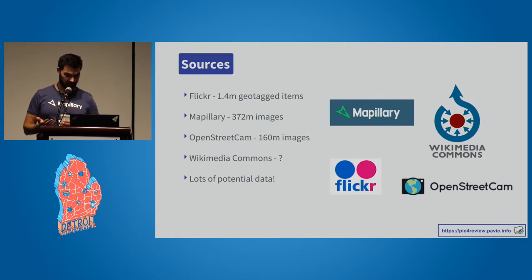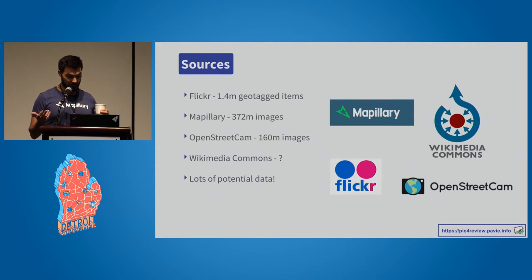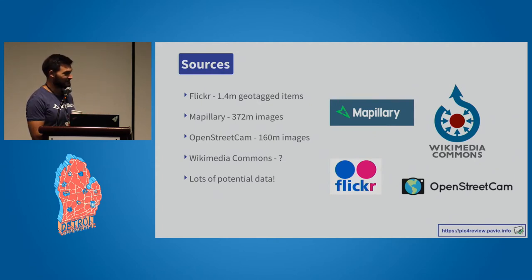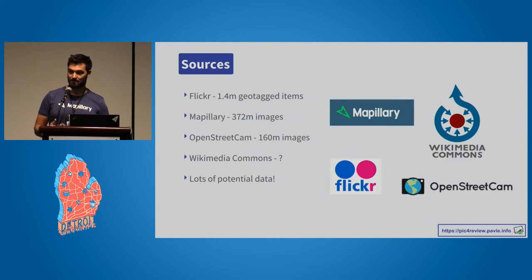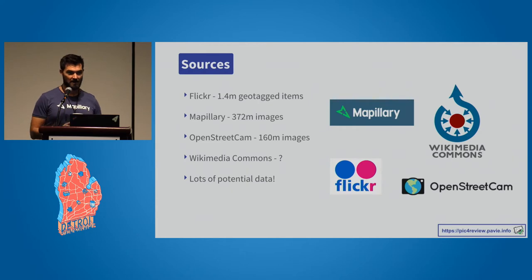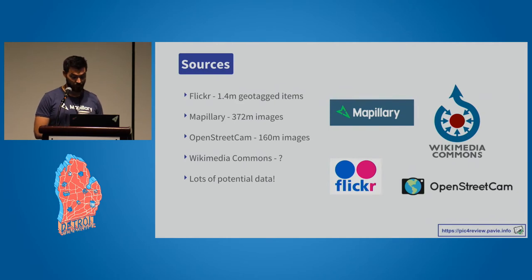There are essentially hundreds of millions of photos across these sources — I'm not sure how many Wikimedia Commons even has that are geotagged — but with all these different sources combined, there's a lot of potential data out there. And when we look at the incompleteness of OpenStreetMap and the problems it has with vague detail, this means we have quite a bit of resources that we can use to harvest more data.